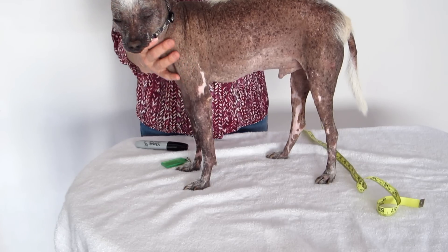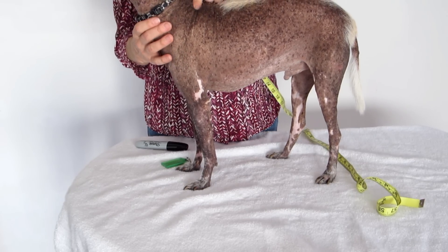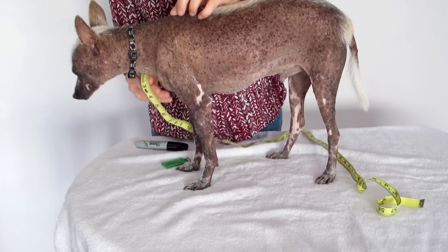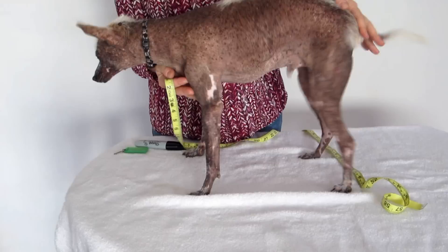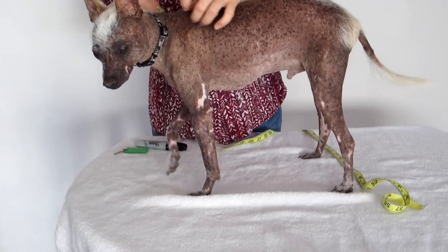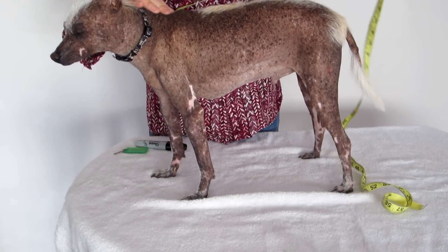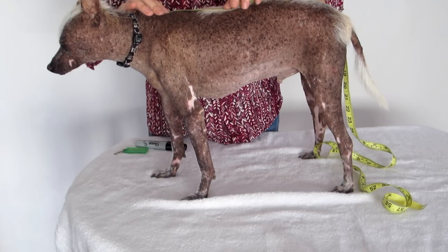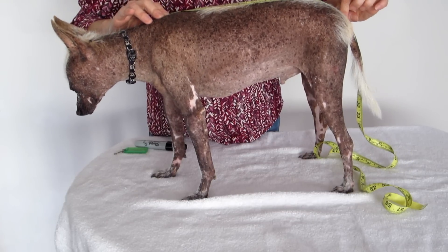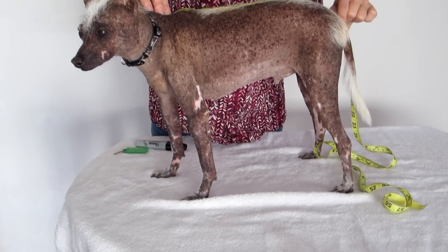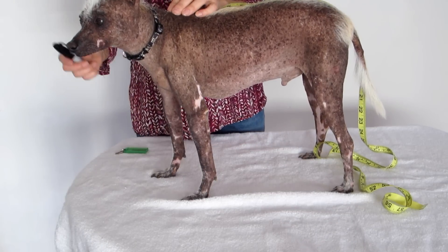Now you'll measure from the nape, which is his shoulder blades really. These two little bones here at the top. Put one end of the tape measure there at the nape and measure all the way to the dock of the tail, just before his tail starts. And write that measurement down.